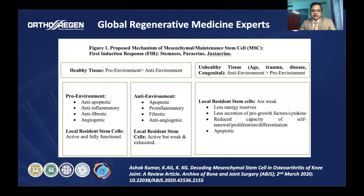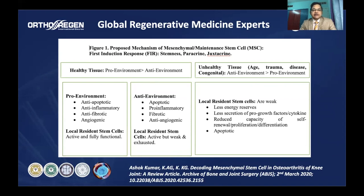Before going into detail, we need to understand a few concepts: the pro environment is anabolic and the anti environment is catabolic. Whenever there is inflammation, injury, congenital issue, or degeneration, there is usually an anti or catabolic environment. In an anti environment, cells are more apoptotic — there is more programmed cell death, more inflammation that heals into fibrosis rather than normal tissue, and less angiogenesis.